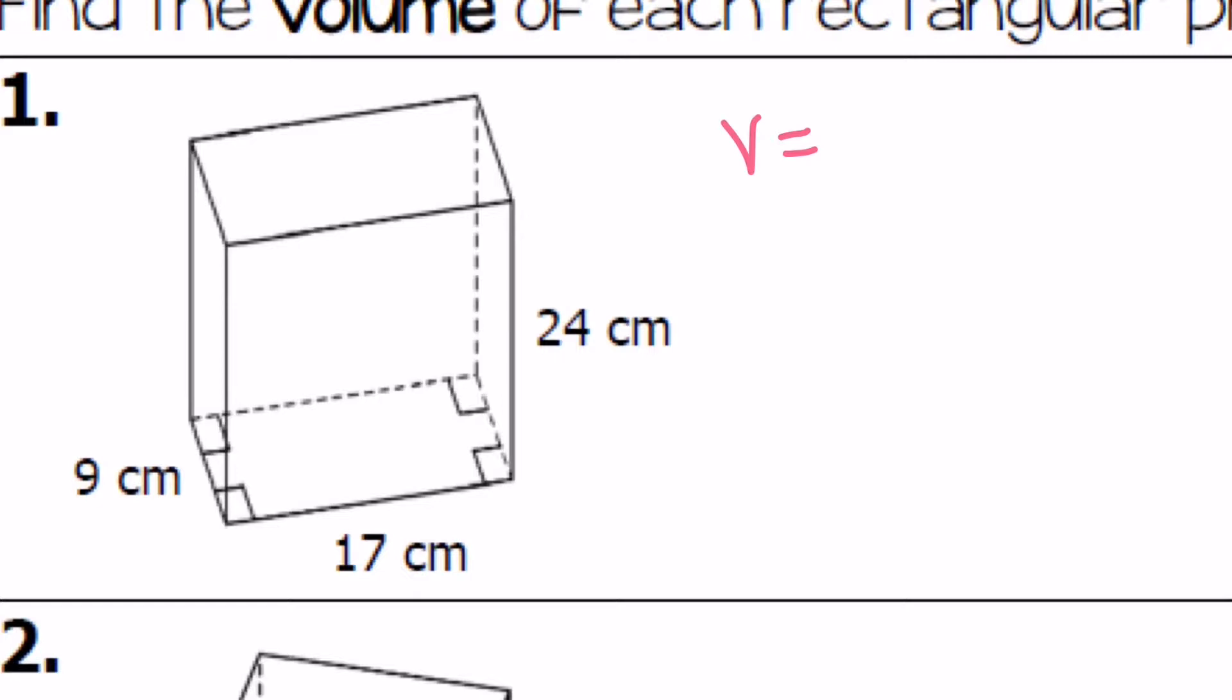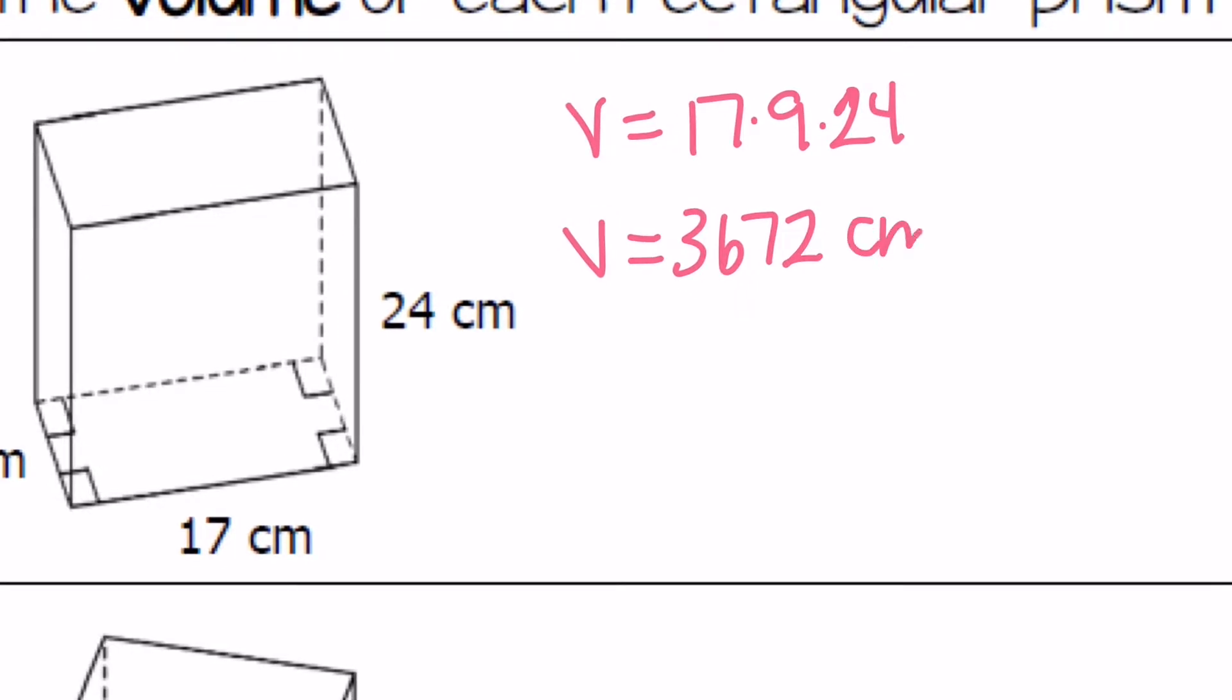So like on number one. If I have my length 17 times 9 is my width times height of 24. Then put that in all in my calculator. And I'm going to end up with a volume of 3672 centimeters.